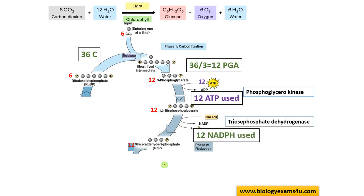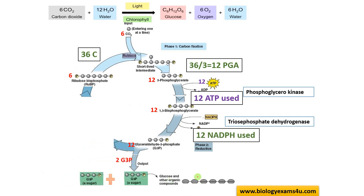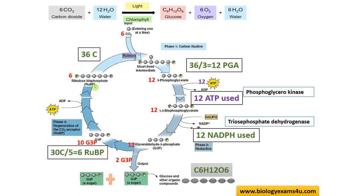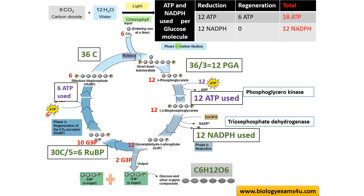Glyceraldehyde-3-phosphate is a versatile intermediate — two molecules combine to form one glucose molecule. We have 12 glyceraldehyde-3-phosphate, out of which 10 are used to regenerate RuBP, completing the cycle. During regeneration, ATP is also utilized. Summary: for the reduction phase, 12 ATP and 12 NADPH are required; for regeneration, 6 ATP. Total: 18 ATP and 12 NADPH per glucose molecule in the C3/Calvin cycle.